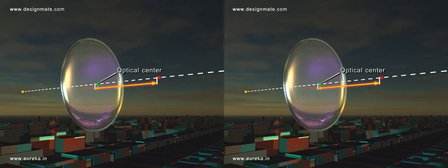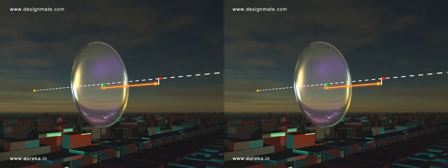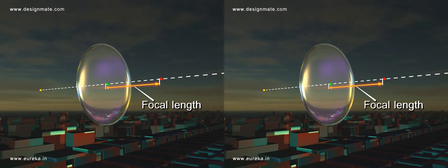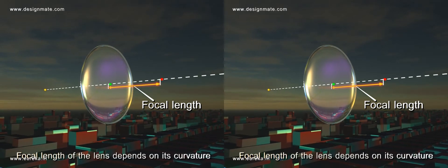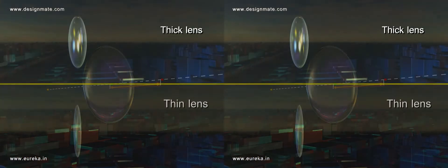The distance from the optical center of the lens to the focal point is called the focal length of the lens. The focal length of the lens depends on its curvature.